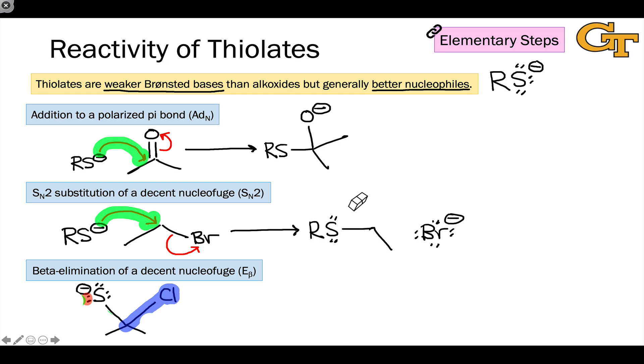So for example, in the substrate shown here, we have an anionic sulfur atom positioned adjacent to a carbon linked to chlorine. So we have a nucleophilic lone pair highlighted in red on the sulfur atom, and an electrophilic carbon linked to a good nucleophuge chlorine, highlighted in blue, and these are adjacent to one another. So we have the ingredients required for beta elimination.